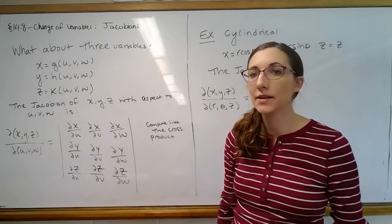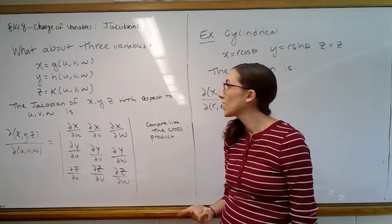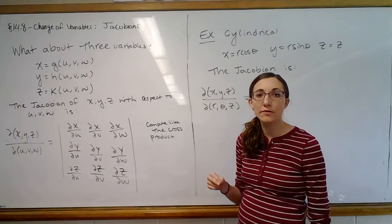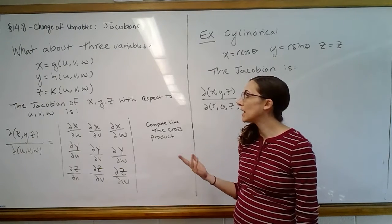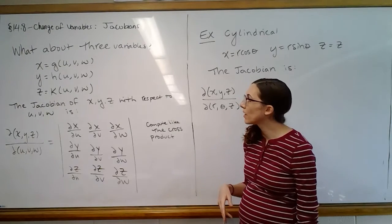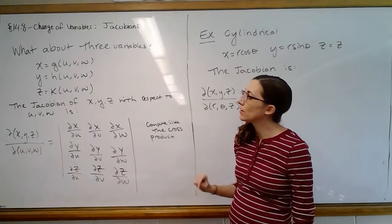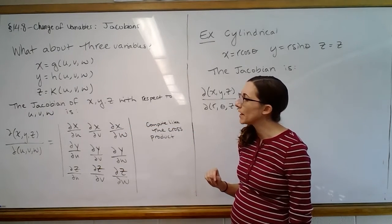and we want to convert that into, say, u, v, w - well, x, y, and z are each going to be represented as a function of u, v, and w. And then the Jacobian of x, y, z with respect to u, v, w, we just get an extra variable on the top and the bottom there.